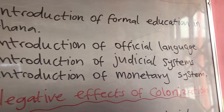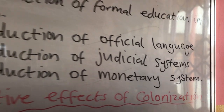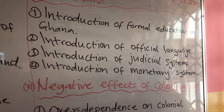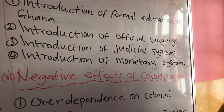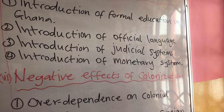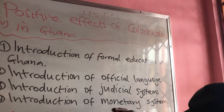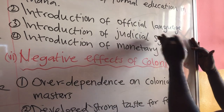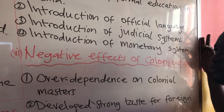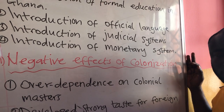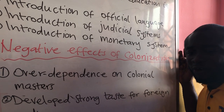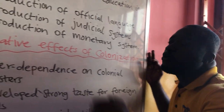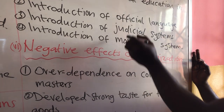Two, the introduction of an official language. Our official language as a country, Ghana, is English. We have our local languages, but English is the official language — and it came as a result of colonization. Three, the introduction of the judicial system. In those days, our chiefs were settling disputes; there was nothing like a court system. It was the white people that came to introduce what is called the judicial system — the court system. Before that, any time there was a conflict or dispute, you went to the palace and the chief settled it.